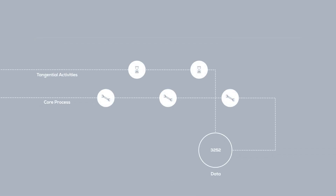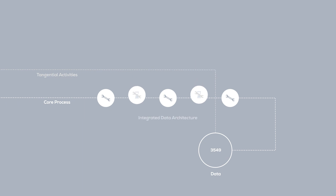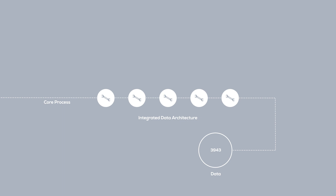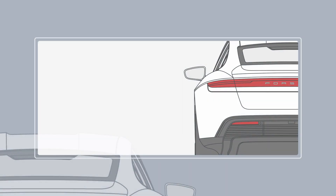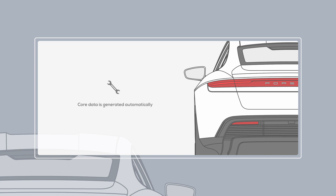On the other hand, core data and process activities create valuable data through the performance of a core process without requiring extra steps for data enrichment. In the car example, the core activity is using the car's brakes, and the core data activity is the brake light switching on when you step on the brake. It's not something you have to think about — it just happens.